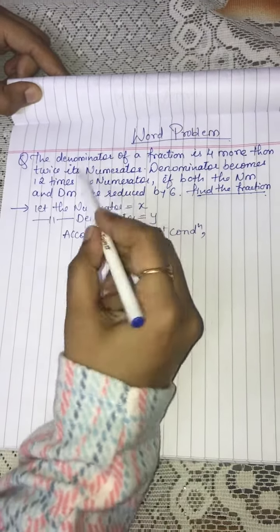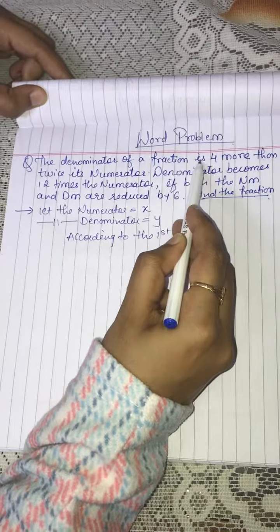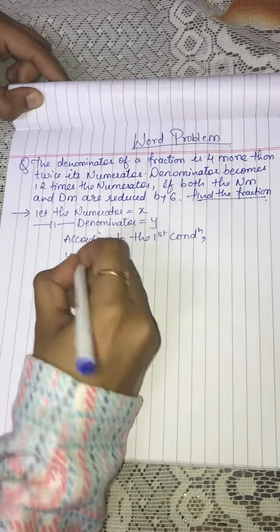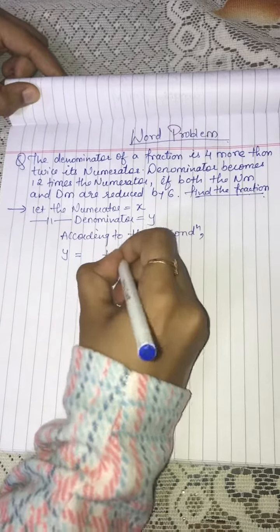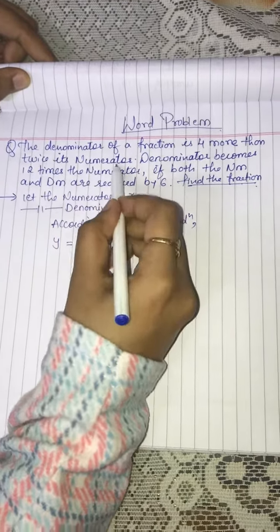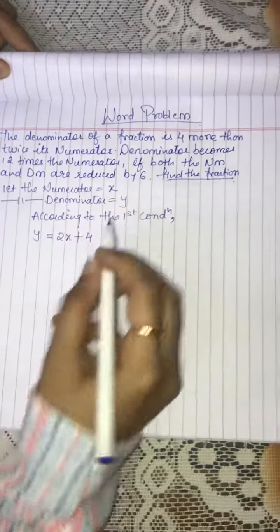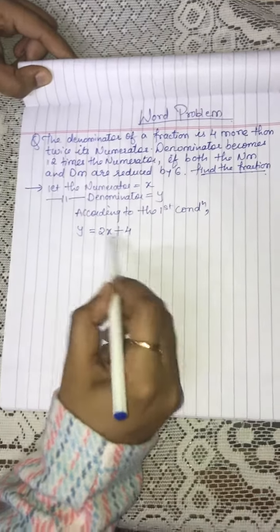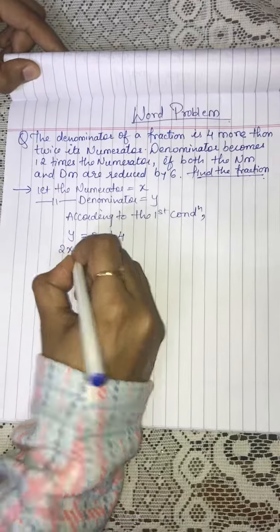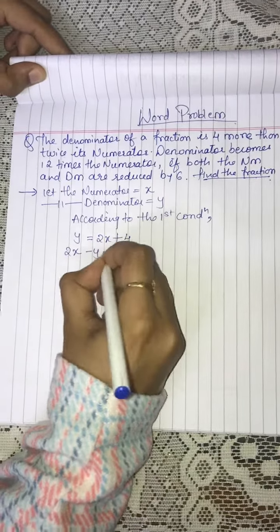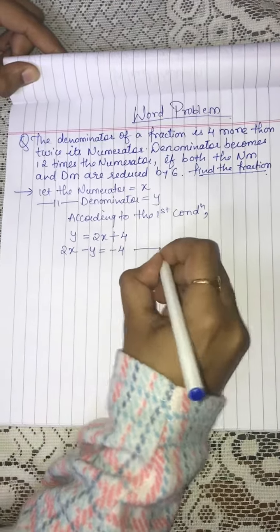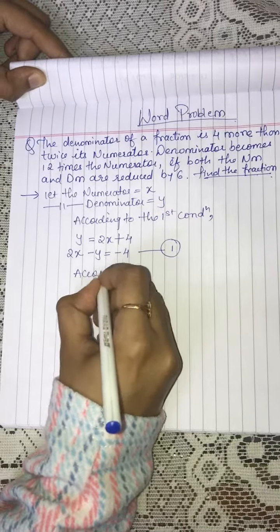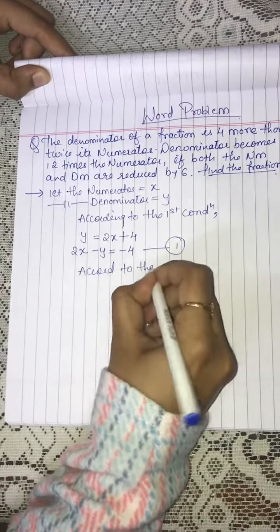According to the first condition: the denominator of the fraction is 4 more than twice its numerator, so y is equal to 2x plus 4. The equation is not in the form ax plus by plus c, so arrange it: we get 2x minus y is equal to minus 4, which is our equation number 1.